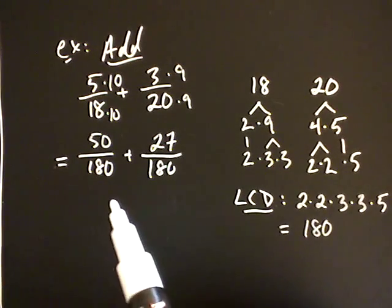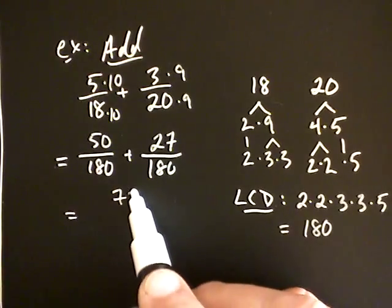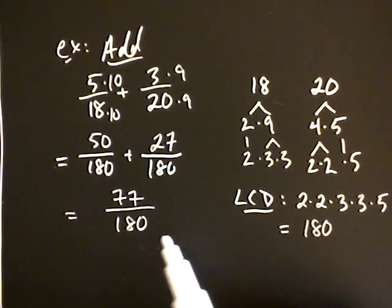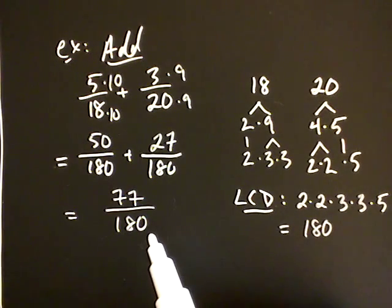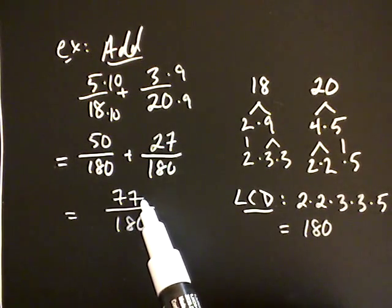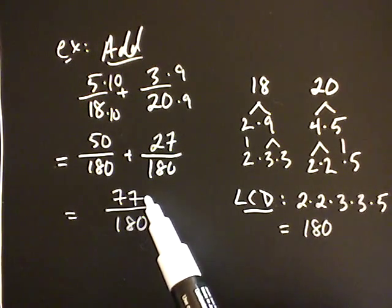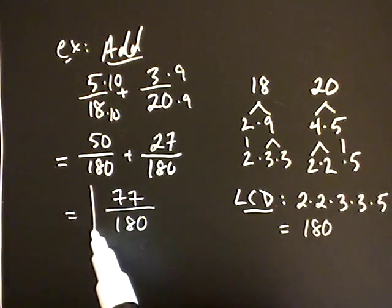Now we're in a good situation, because I'm adding together two fractions with the same denominator. I can add the numerators and get seventy-seven over one eighty. At this stage, sometimes you can reduce this fraction. One eighty is just twos, threes, and fives, so any simplification would require a two, three, or five in the numerator. But seventy-seven is only seven times eleven, and one eighty is only twos, threes, and fives — so there's no cancellation. Seventy-seven over one eighty is our sum.